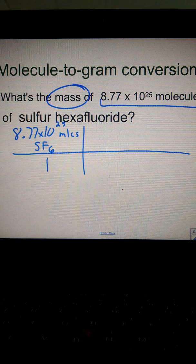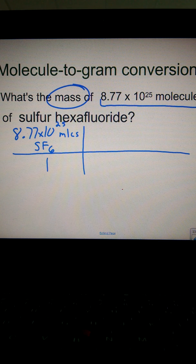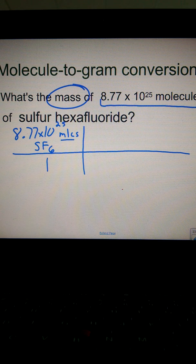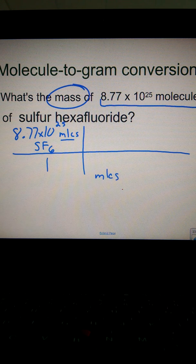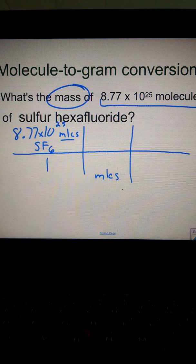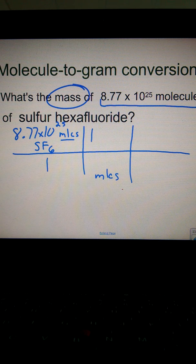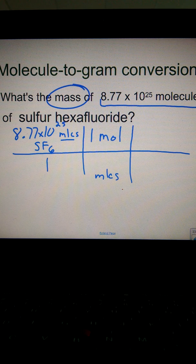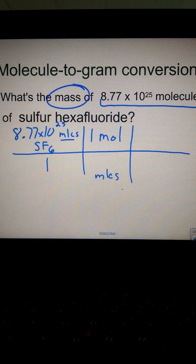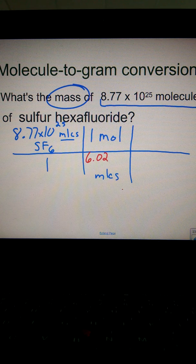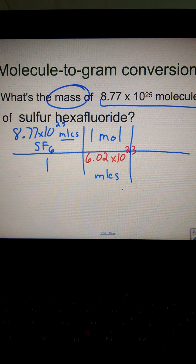So we start off with our large amount of molecules. In order to get this molecule unit to cancel out, we have to put it on the bottom of our next conversion. So I'm going to put molecules down there. And we know the conversion between molecules and a mole of molecules. A mole of anything, anything and everything, is 6.02 times 10 to the 23rd of anything.